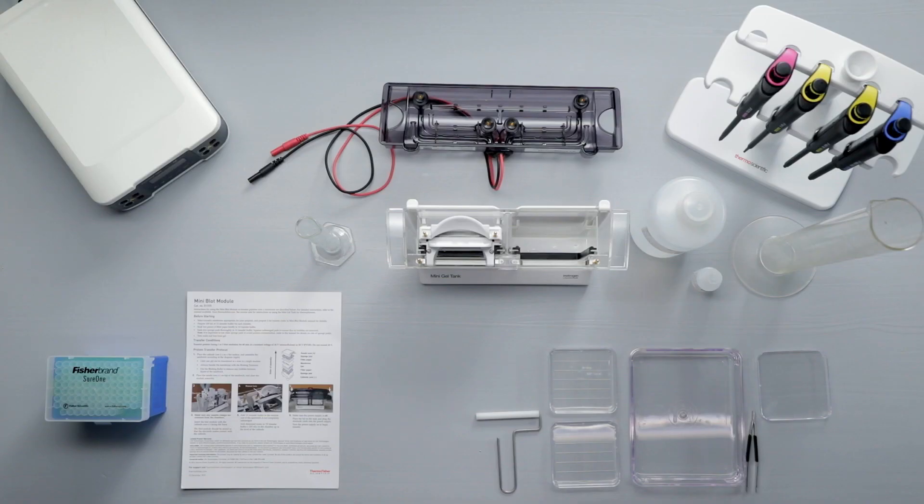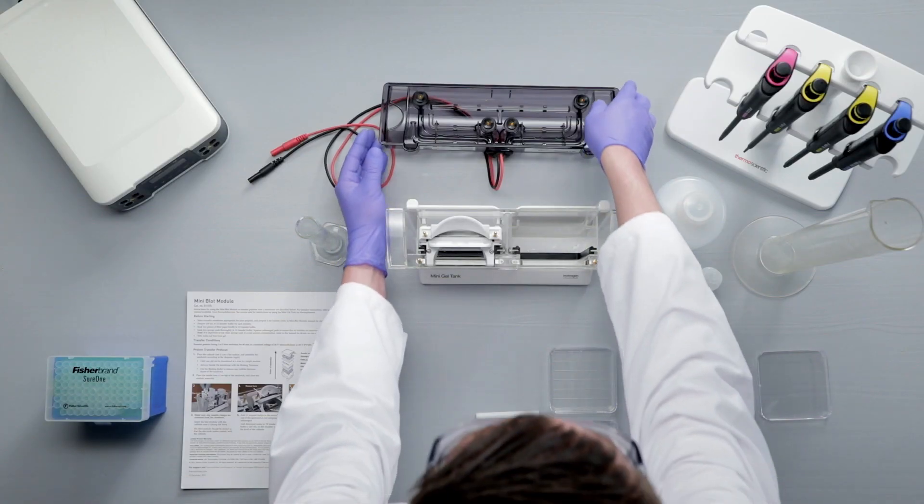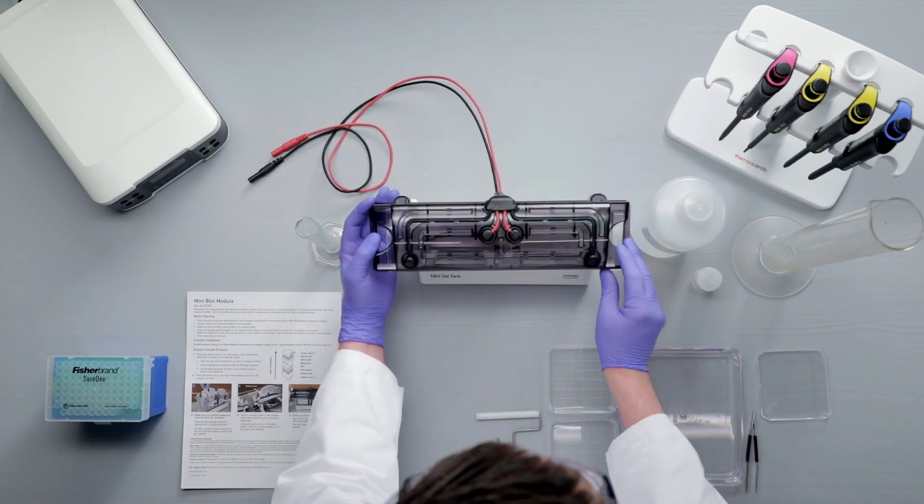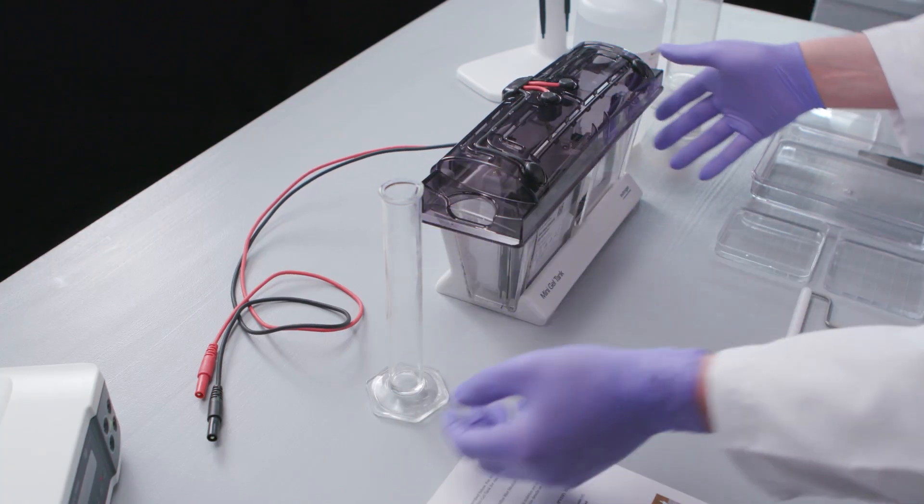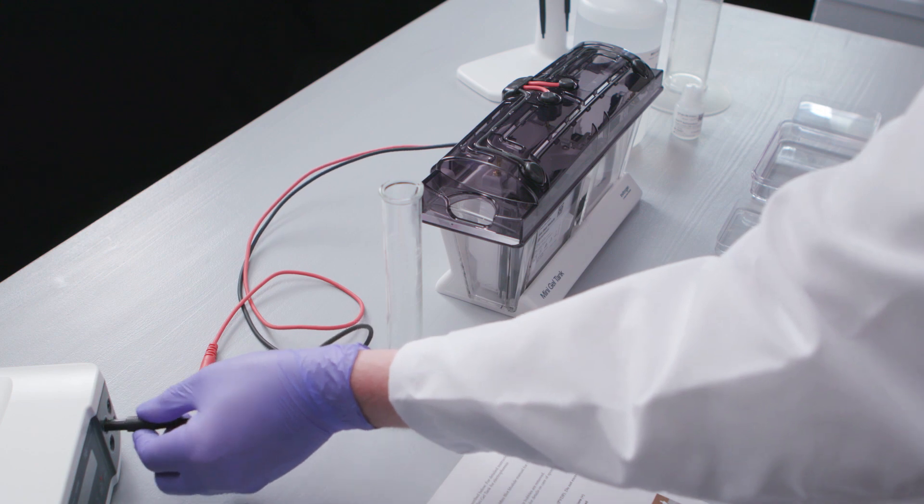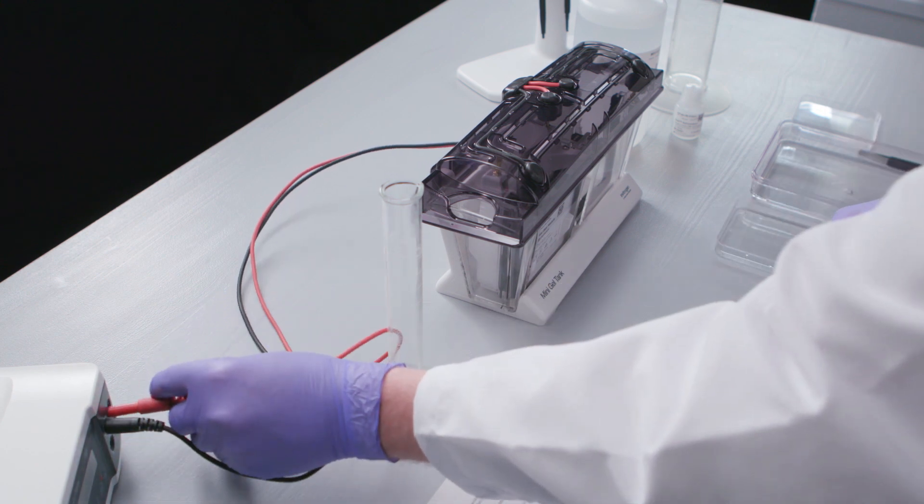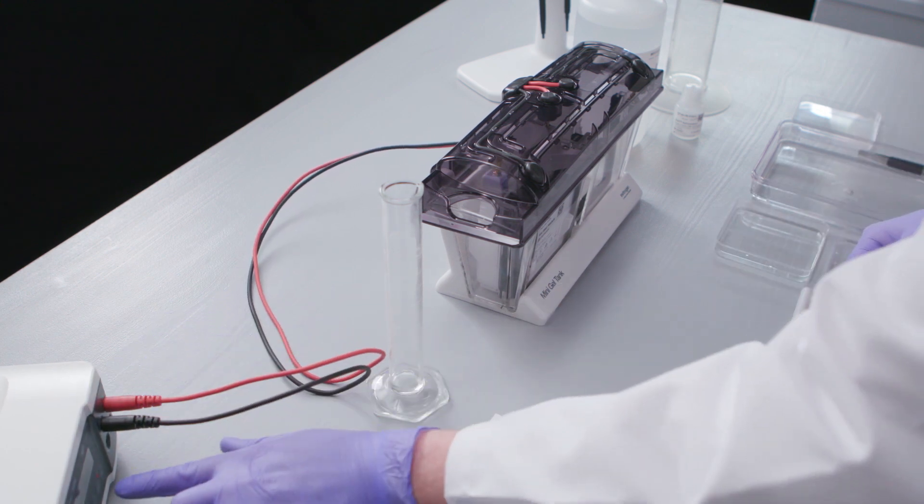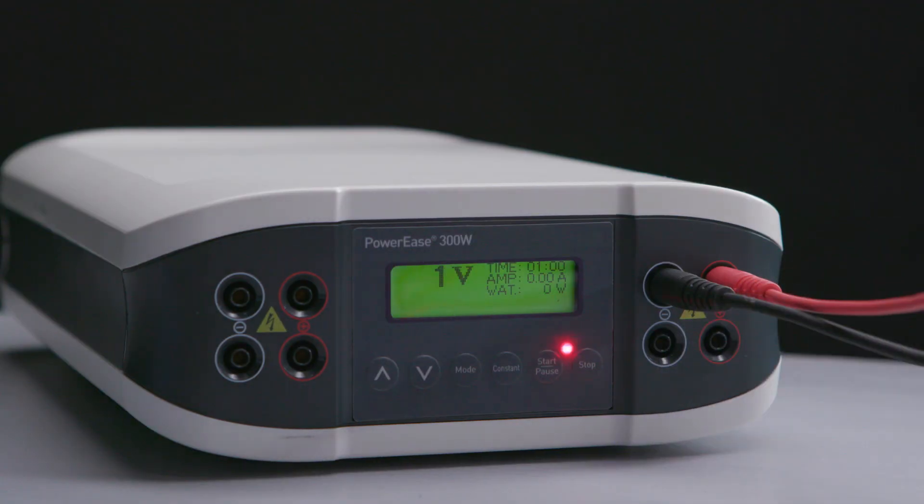Make sure the power supply is off. Place the cover on the tank and plug the power leads into the power supply. Turn the power supply on to begin the transfer. For nitrocellulose membranes, transfer at a constant 10 volts for 60 minutes. For PVDF membranes, transfer at 20 volts for 60 minutes.